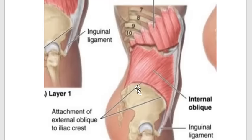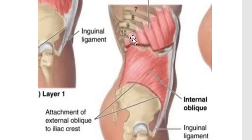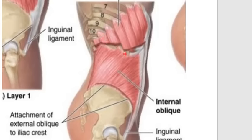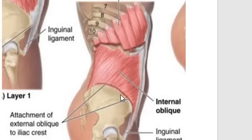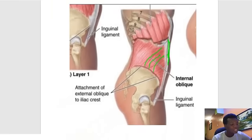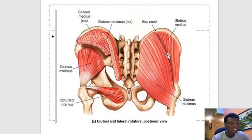The anterior abdominal muscles take their origin or insert on the iliac crest. For example, the external oblique muscle does insert on the iliac crest. The internal oblique muscle takes its origin from the iliac crest and goes towards the linea alba and the midline. Those are important muscles inserting or originating from the iliac crest. We also have the gluteal muscles — specifically gluteus maximus and gluteus medius — taking their origin from the iliac crest.